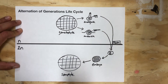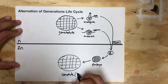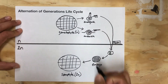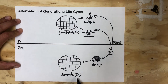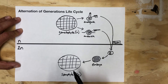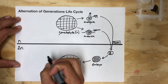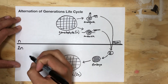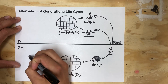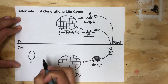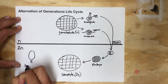Our sporophyte is now going to make spores — sporophytes make spores — and this part is always difficult for many people, because the sporophyte is diploid and the gametophyte is haploid. When we think of ourselves, we are diploid and we go through meiosis to make gametes. But remember, this is a plant — they don't have the same life cycle as us. In plants, the sporophyte makes a sporangium.